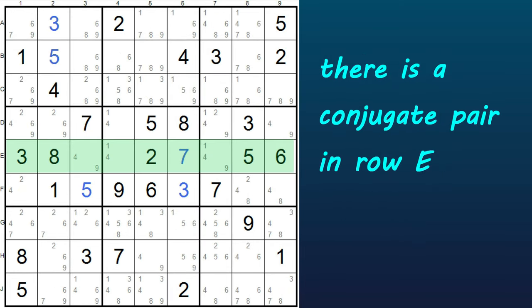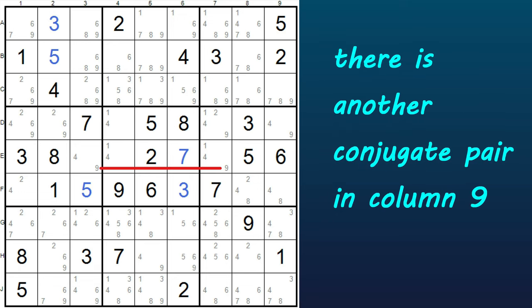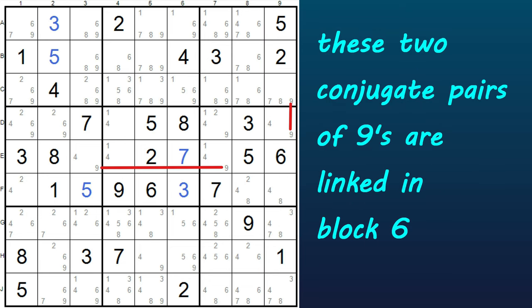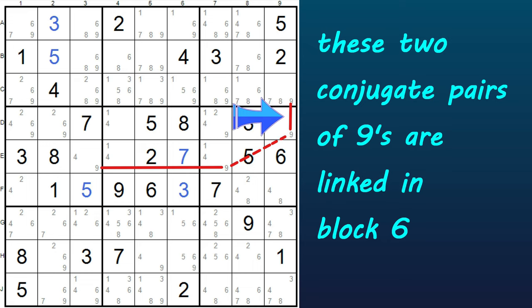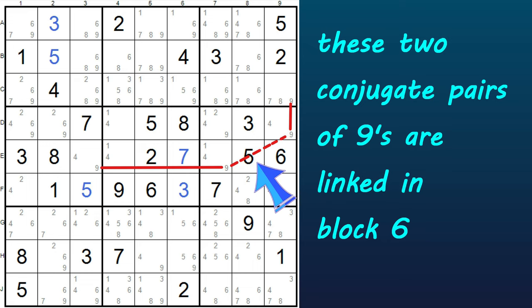We can see here there's a conjugate pair in the fifth row — it's also a pair of 9s. The 9 appears exactly twice in this row. There's also a conjugate pair in column 9; again, the 9 appears twice in this column. These two conjugate pairs of the number 9 are linked, or meet, in block 6. These 9s in the fifth row form a string, and these 9s in the last column also form a string, and these 9s in block 6 form the tail of the kite.